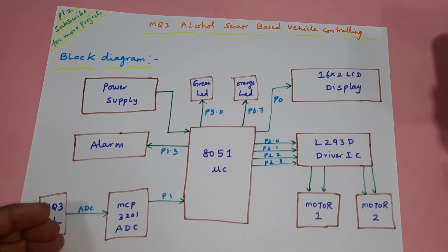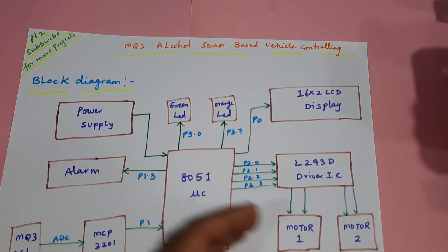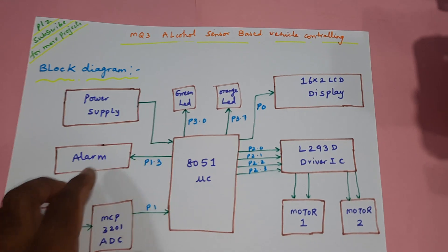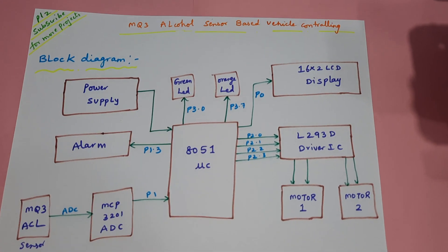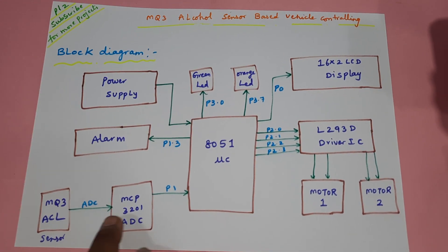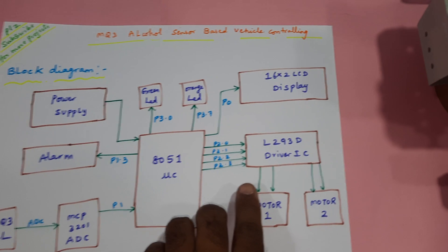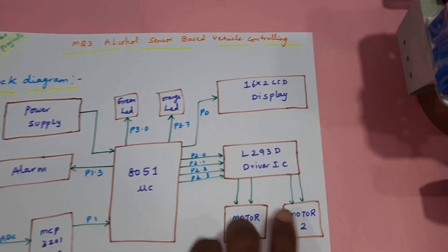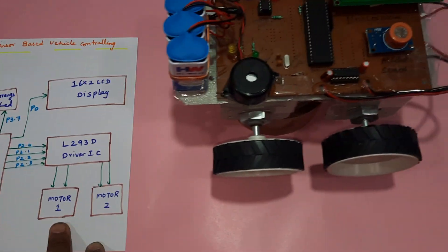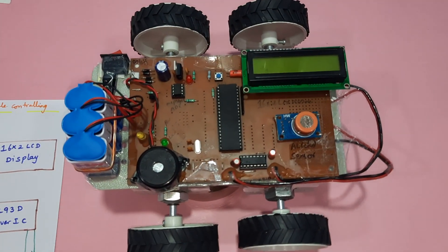When alcohol is 100%, the motor — running at 200 RPM — should be turned off, the alarm turned on, and the orange LED turned on. If there is no alcohol detected, the engine stays on and the green LED turns on. This is shown in the block diagram: MQ3 alcohol sensor, MCP3201 ADC IC, L293D driver IC, and two motors.